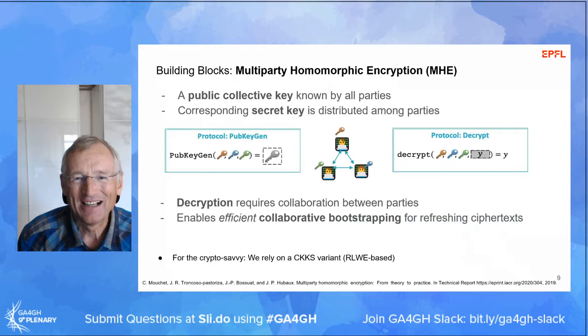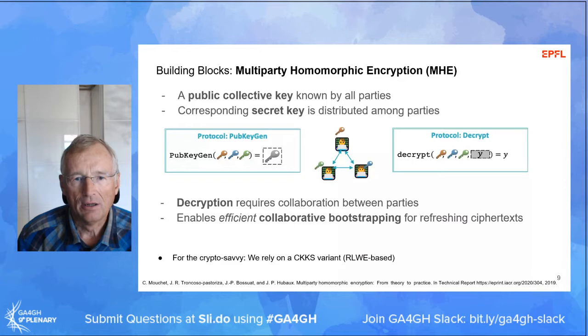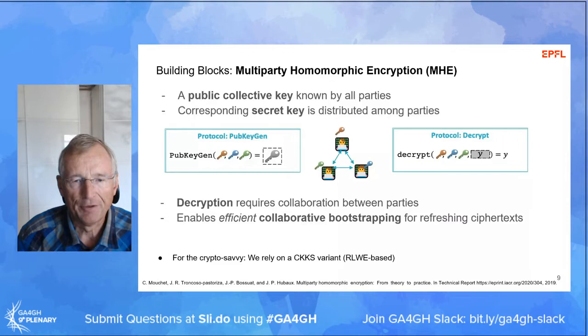The third building block is multiparty homomorphic encryption — the combination of those two. This is the trick that enables the level of performance needed: the ability to encrypt under a public collective key known by all parties, but where the corresponding secret key for decryption is distributed among all the parties. This means that the more partners or institutions are in the federation, the higher the robustness of the whole scheme becomes.